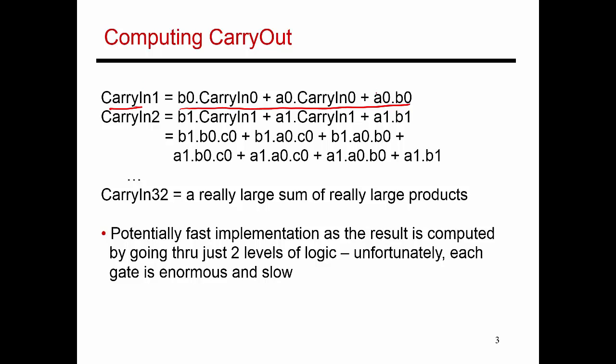At block number zero, I'm going to take the corresponding input bits A0 and B0 and AND those. Then I'm going to take A0 ANDed with the carry-in coming to the stage, take B0 ANDed with the carry-in coming to the stage, and then take an OR of all three terms. Similarly, for the next 1-bit ALU, the carry coming out is going to be a function of its input bits A1 and B1, and the carry coming into that stage — which is the carry produced by the previous stage. This is the same equation as before but with zeros changed into ones. I can then expand this carry-in term and substitute its expanded form.